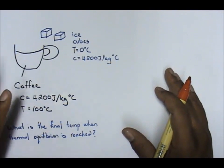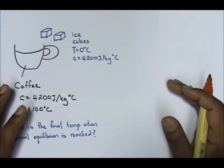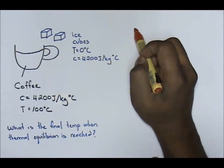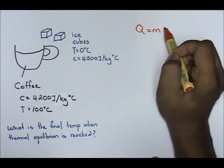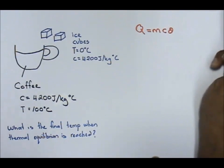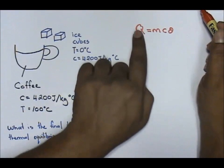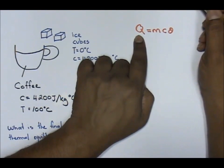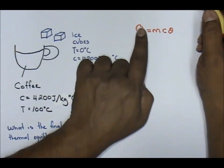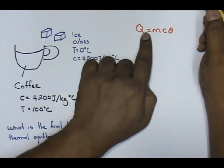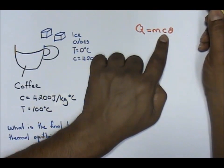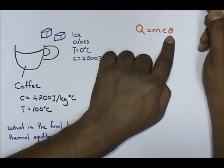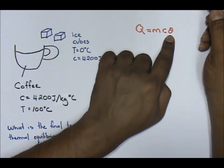Now, in order for us to solve this question, I am going to introduce to you a formula, and this formula is Q equals to MC theta. Q stands for heat released or heat absorbed. M stands for mass. C stands for the specific heat capacity, and theta is the temperature difference.